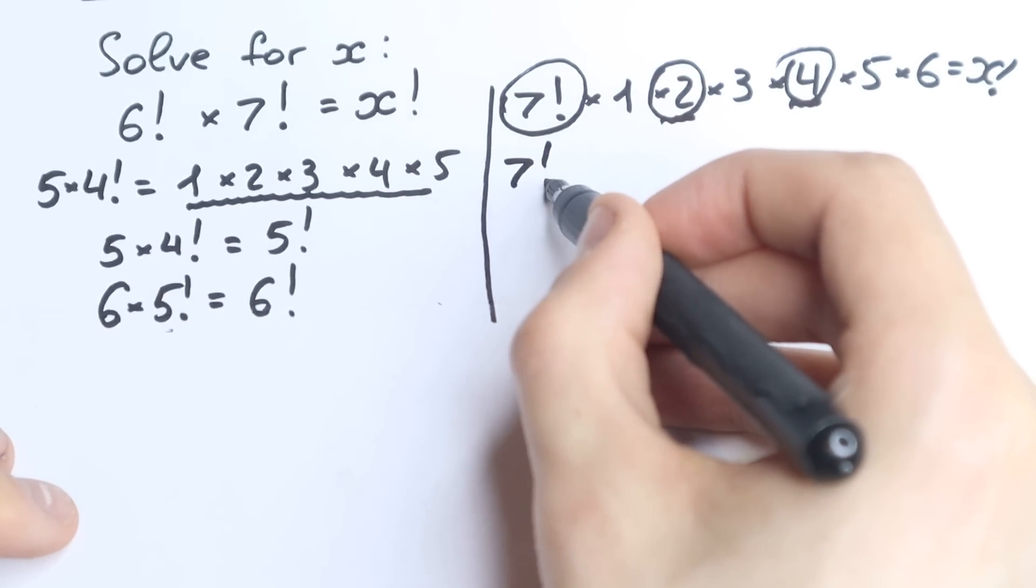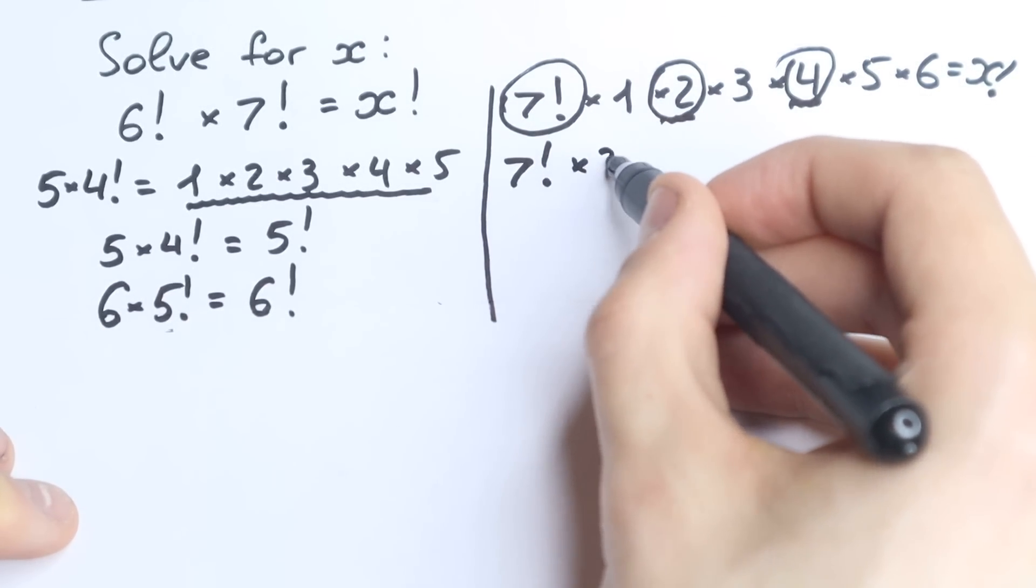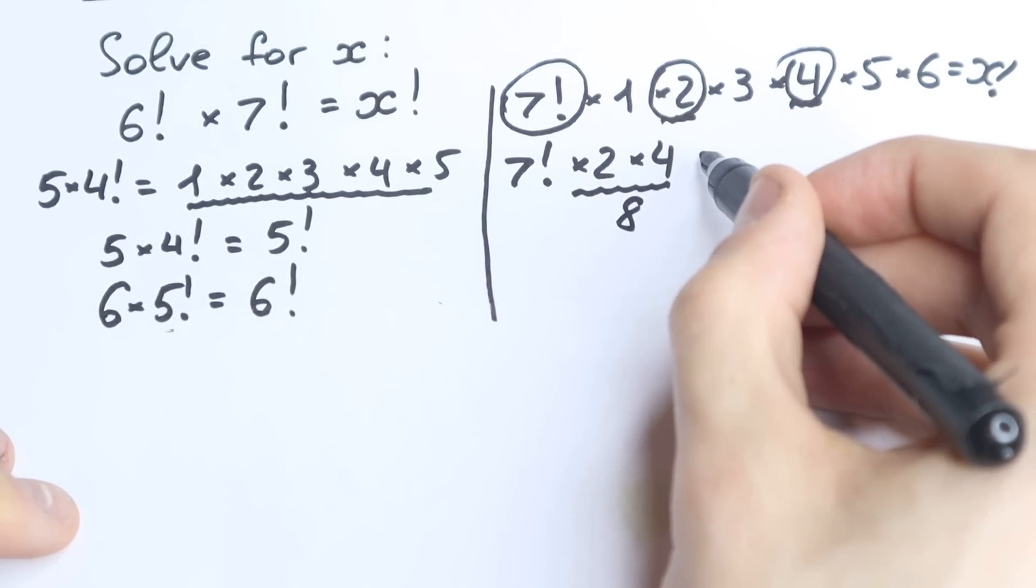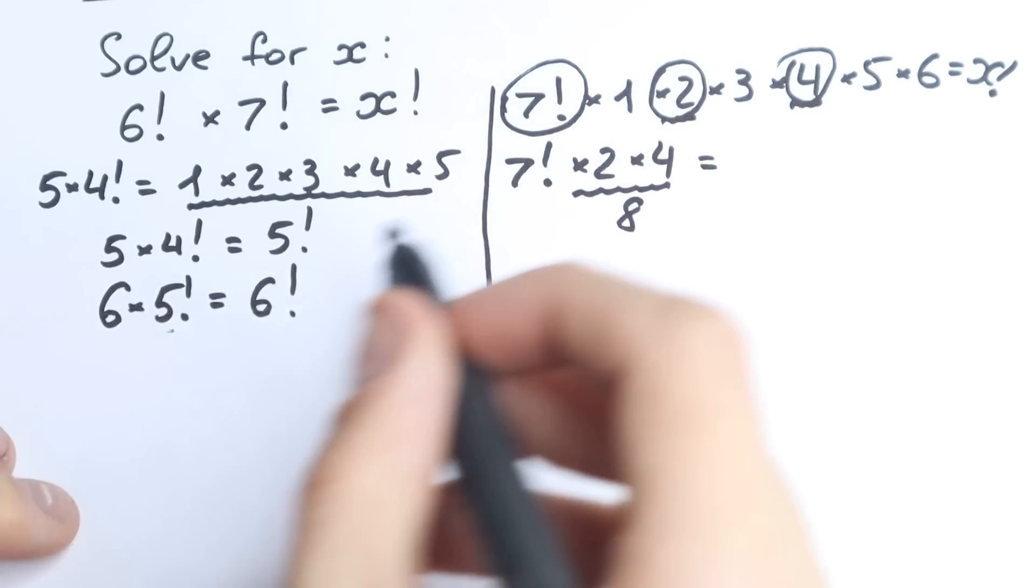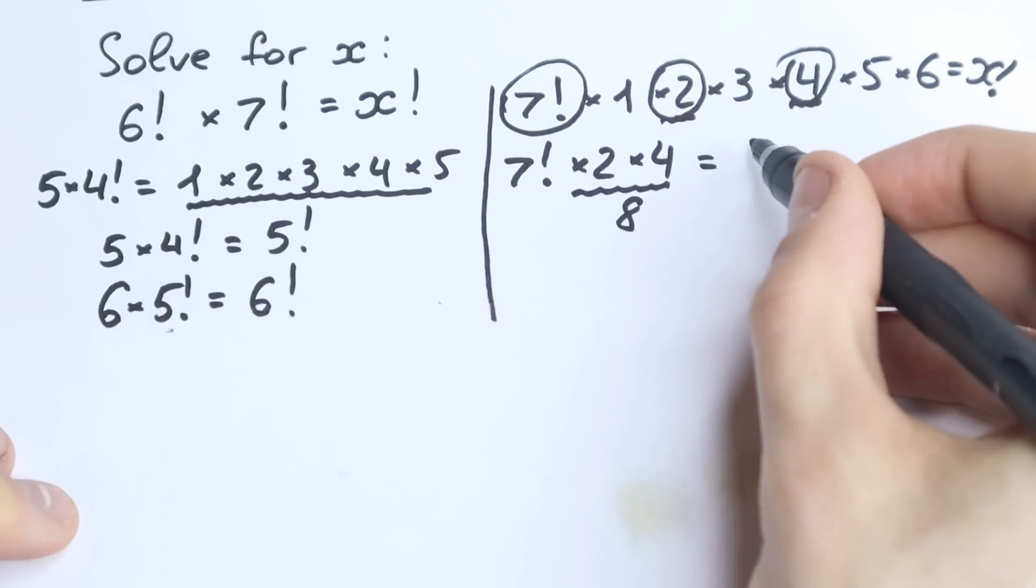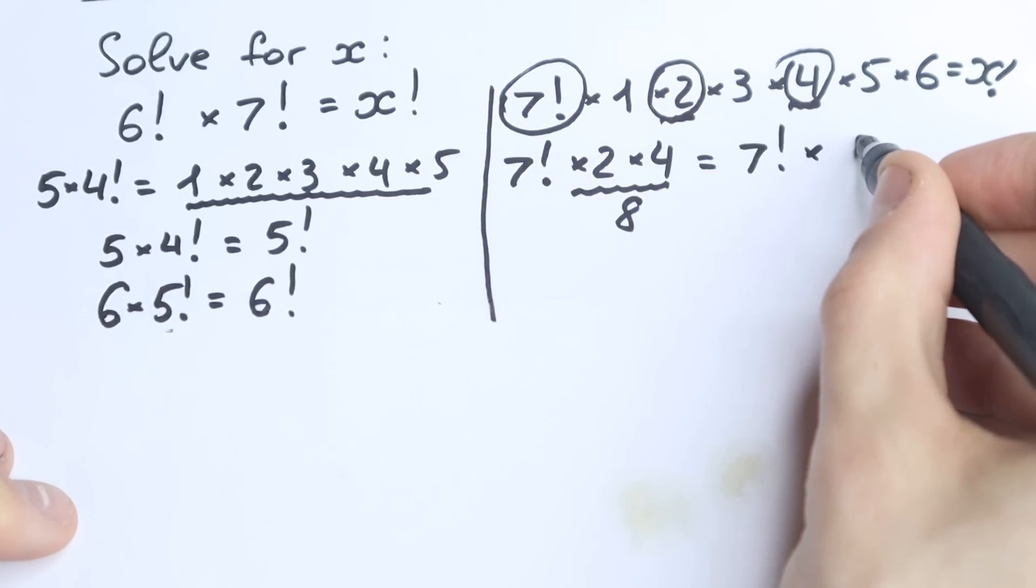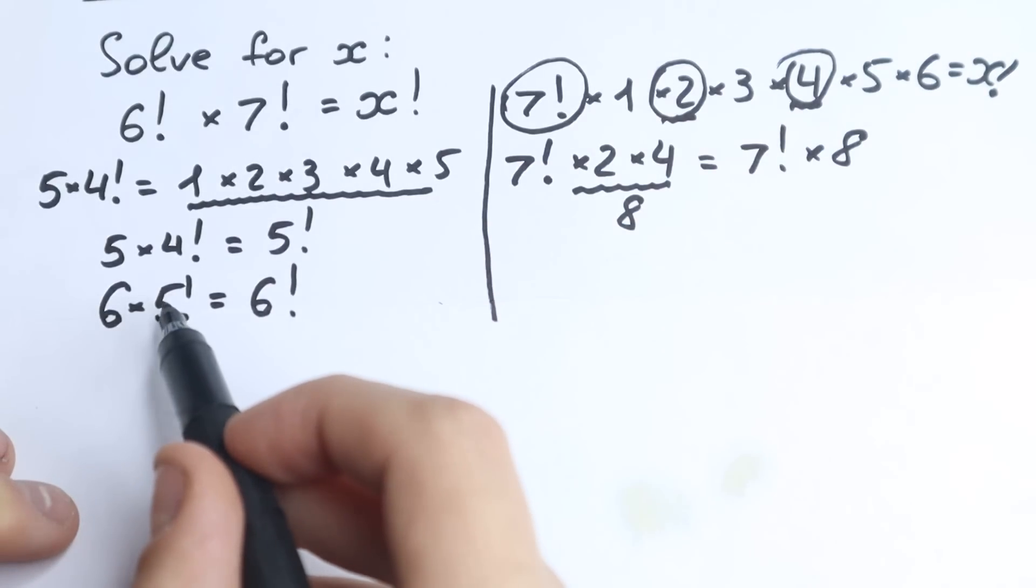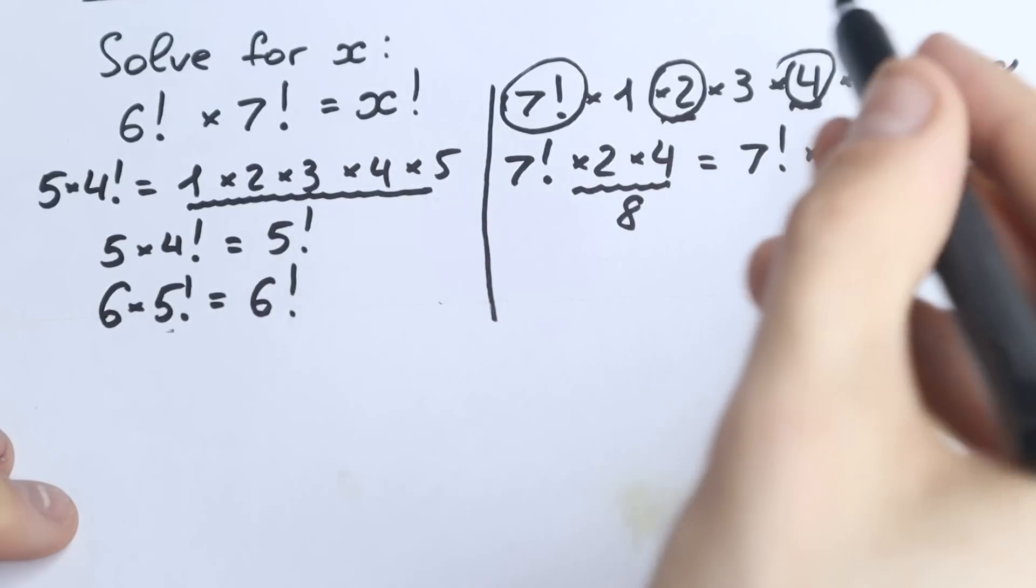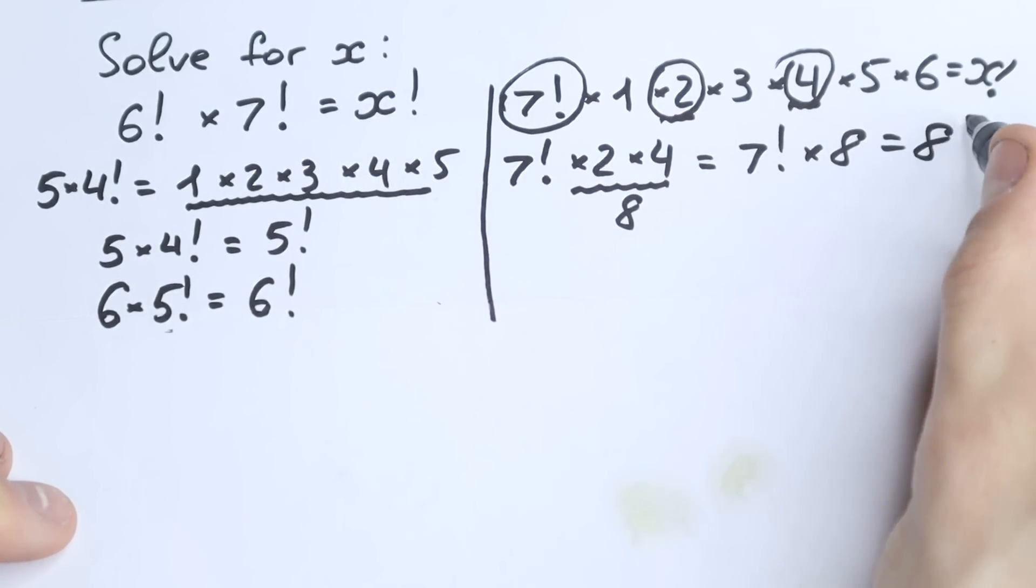So if we take this all together, we have 7 factorial times 2 and times 4, which is equal to 8. So 7 factorial times 8. Let's look at it. 7 factorial times 8 equal to 8 factorial. Yeah, same logic as before. So equal to 8 factorial.